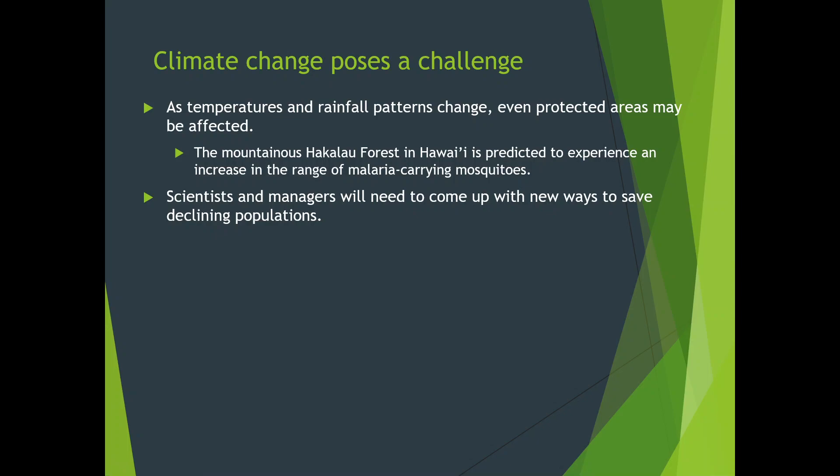Climate change poses a challenge to conservation. As temperatures and rainfall patterns change, even protected areas may become ineffective. For example, we try to preserve coral reefs in Hawaii through ecotourism like scuba diving, but ocean temperature changes cause coral bleaching — no one will come just to see white, bleached corals. There's not much we can do about that regardless of ecotourism efforts. Scientists and managers will need to come up with new ways to save declining populations like the coral reefs.